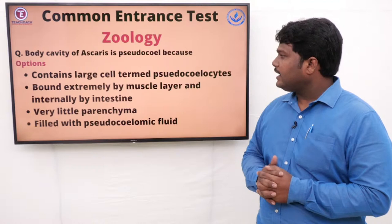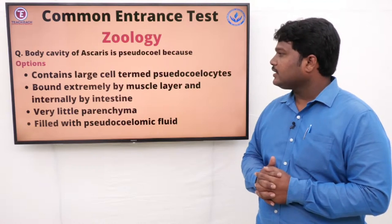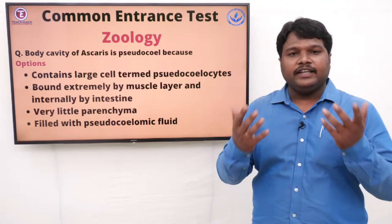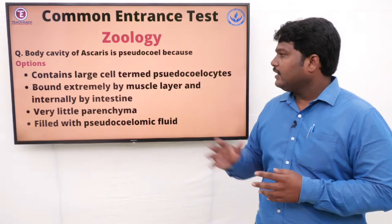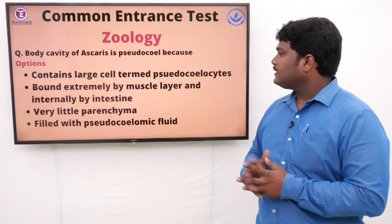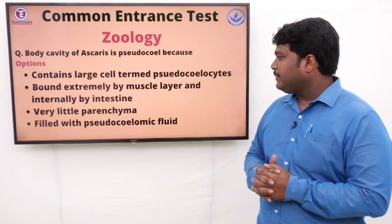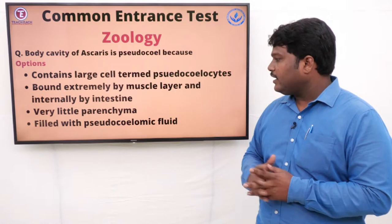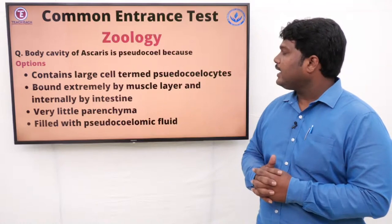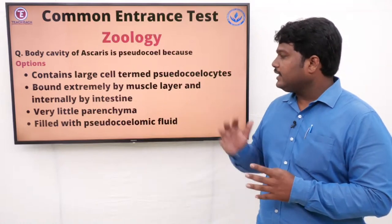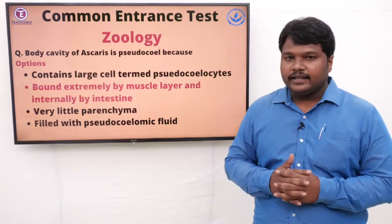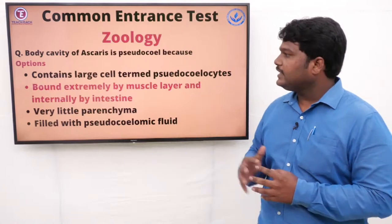Question 41: Body cavity of Ascaris is pseudocoelom because. Pseudocoelom means it may be present but it has no true lining. Options: A) Contains large cells termed pseudocoelocytes, B) Bound externally by muscle layer and internally by intestine, C) Very little parenchyma filled with pseudocoelomic fluid. The right answer is option B — it is bound externally by the muscle layer and internally by the intestine.